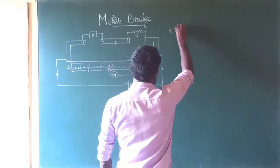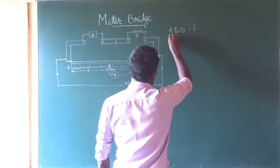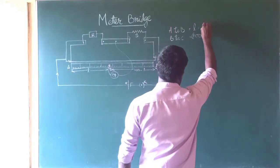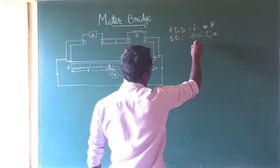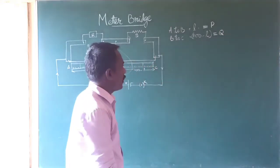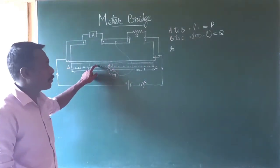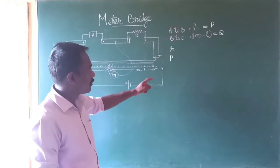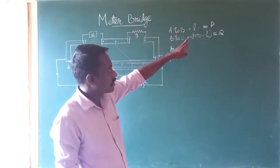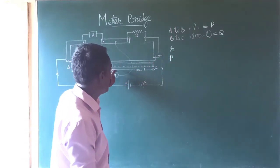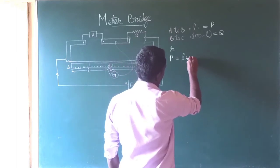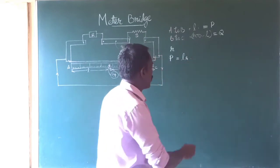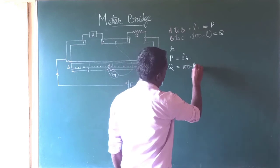So A to B is L, and B to C is 100 minus L. The length L may be taken as resistance P, and the length 100 minus L may be taken as resistance Q. If small r is the resistance of the wire per centimeter length, then the resistance P can be written as L into r, and the resistance Q can be written as (100 minus L) into r.